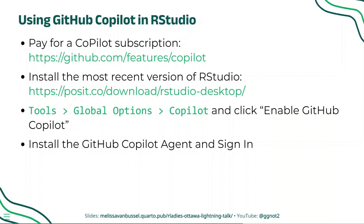To use GitHub Copilot in RStudio, you'll first need to pay for a subscription to the service using your GitHub account. You can go to github.com/features/copilot to sign up. From here, you'll need to make sure that you have the most recent version of RStudio installed, which you can download from posit.co/download/RStudio-desktop.